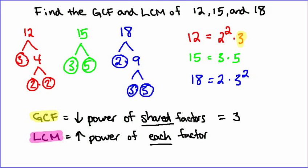For the LCM I'm looking for the highest power of every factor. For 2, I have 2 squared in 12 and 2 to the power of 1 in 18 — no 2 in 15. So 2 squared is the highest and will be part of the LCM. For 3, it appears in all three numbers; the highest power is 3 squared. And lastly, 5 appears as a factor of 15 — it's not shared, but it is still included in the LCM as the highest power of that factor.